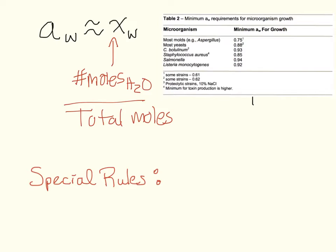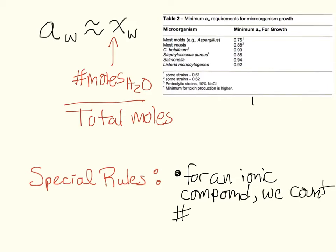And there are some special rules we've got to keep in mind. And for an ion, or an ionic compound actually, we have to count number of ions, so total moles of ions.